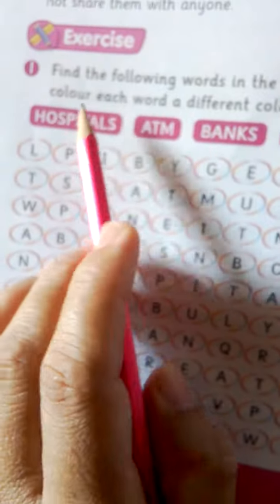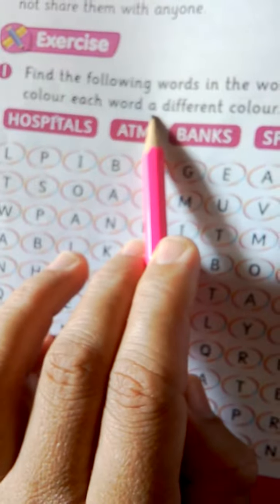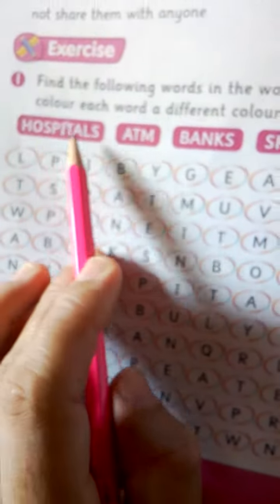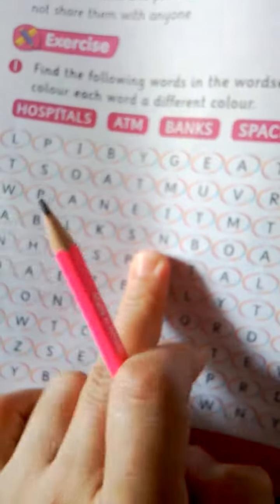Find the following words in the word search and color each word a different color: Hospitals, ATM, Bank, Space, Create. In words, you have to search in this word search and fill up each one in different colors.